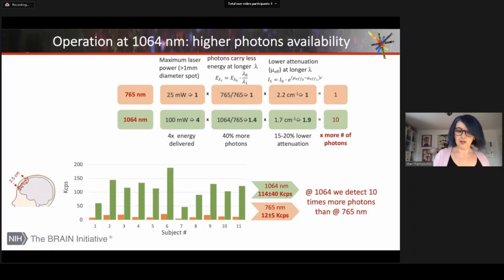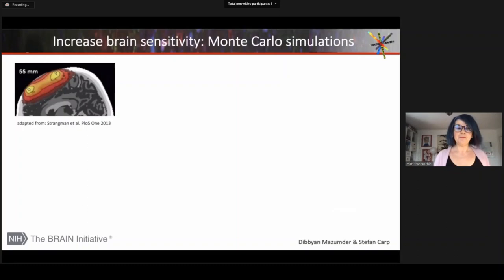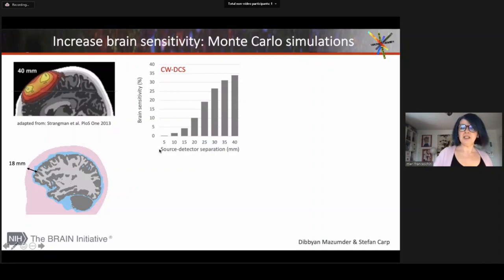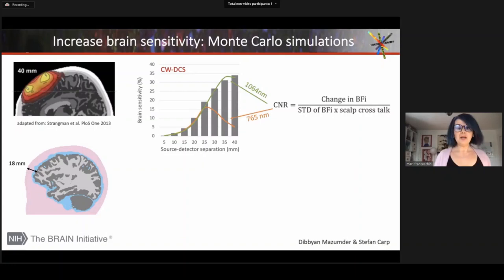Why do I need all these photons? Let me use Monte Carlo simulation to explain that. It's known that to increase brain sensitivity with NIRS and DCS, we need to increase source detector separation. Using a 3D segmented head and running Monte Carlo, you can see in continuous wave DCS, brain sensitivity increases with source detector separation. In my Monte Carlo, like in real life, I can add all the noise and the fact that there are much fewer photons at larger separation, and there is still scalp crosstalk. You can see that effectively, I cannot measure farther than 2.5 centimeters at 765 nanometers, where I can go farther because I have much more photons and better SNR at 1064 nanometers, and that increases my brain sensitivity.